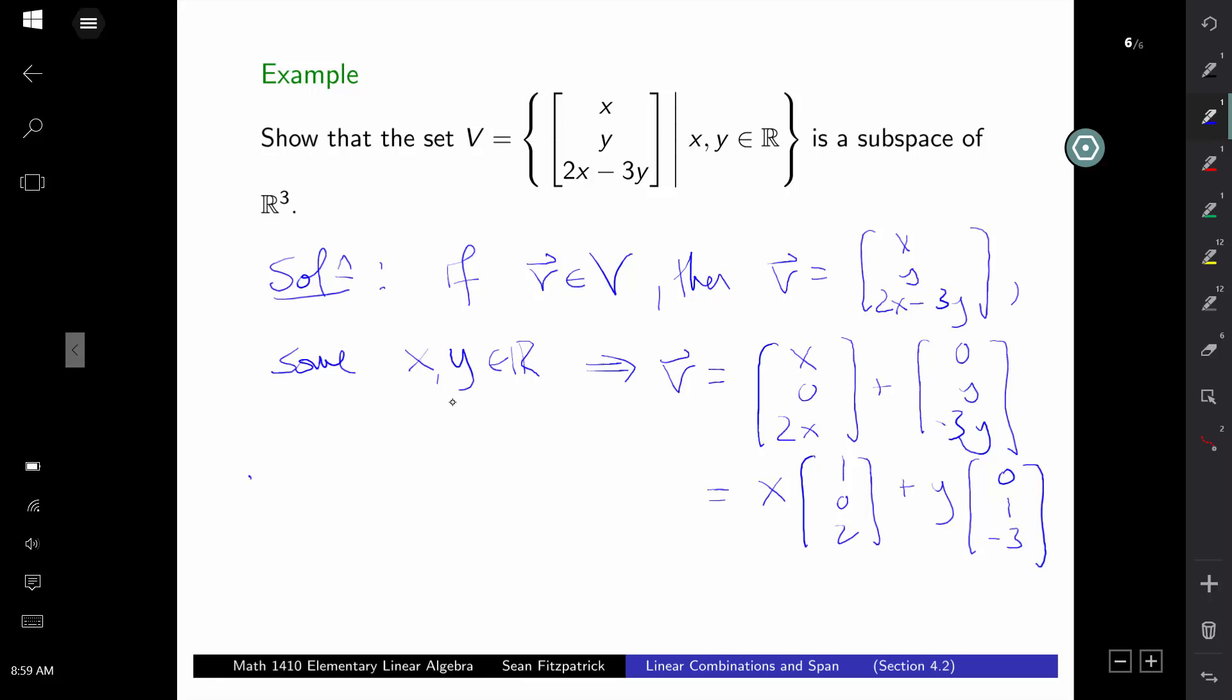And what that tells me is that V belongs to the span of the vectors (1, 0, 2) and (0, 1, -3). And in fact, this is sort of an if and only if. So if V belongs to the span, then V is of the correct form. And if V belongs to this set, capital V, then definitely it belongs to that span. And so what we get is that this set here must be equal to V. So V is a span, and since V is a span, it must be a subspace. That's the argument we make here.